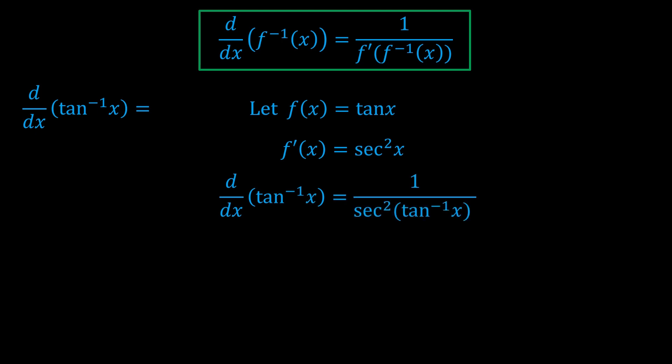We just use the trig identity 1 plus tan squared equals sec squared. If you don't know where this is from, it's just from the sin squared plus cos squared equals 1 identity. We have 1 over 1 plus tan squared of tan inverse x. Tan and tan inverse x undo each other. So this is just 1 over 1 plus x squared.